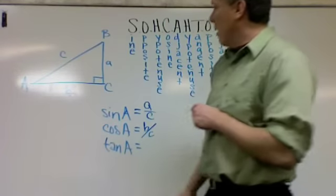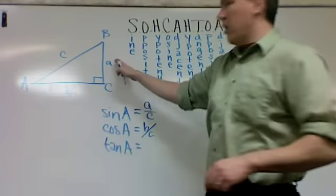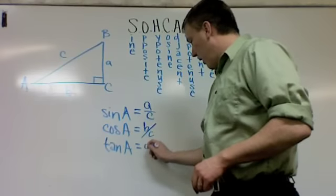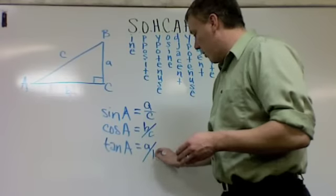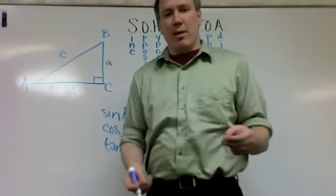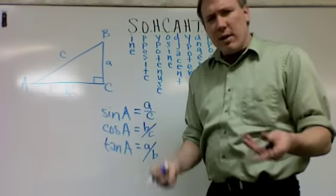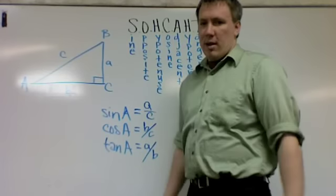And then lastly, the tangent is the opposite value, in this case all the way over opposite of A, is the little a here, divided by the adjacent, which is B. And again, these will just be in real problems replaced by numbers. So that's the simple idea behind this. We'll go over this some more tomorrow, but I want you guys to start working together on it today.